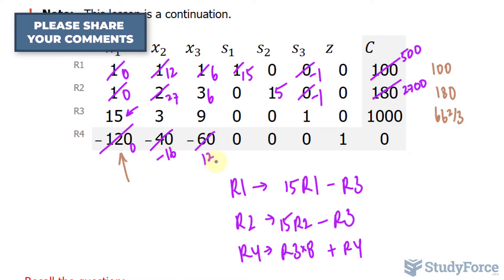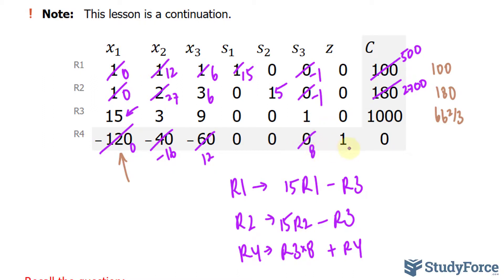So our new row 4 becomes 0. Negative 40 becomes negative 16. Negative 60, 12, 0, 0, 8, and 1. The constant is 8,000.